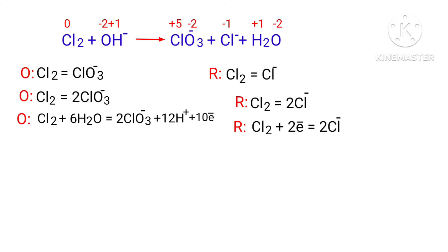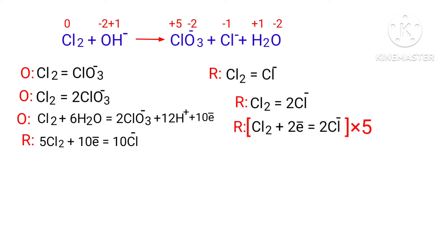Make electron gain equivalent to the electron loss. The electrons lost in the oxidation half reaction must equal the electrons gained in the reduction half reaction. The oxidation half reaction has 10 electrons, but the reduction half reaction has only 2 electrons. To balance them, multiply the reduction half reaction by a coefficient of 5. Now you can add both reactions together.